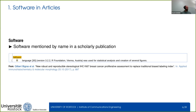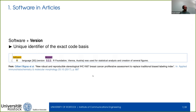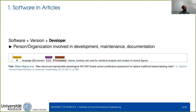So, how is software mentioned in scientific articles? Here in the example we have R, mentioned because it was used for statistical analysis and creation of several figures. It's important to note that we only consider software mentioned by name — sometimes authors would use phrases like 'computer software' or 'source code,' and those generic terms we do not consider. There is also further information about the software, such as version 3.2.2, which identifies the unique development state of the software that was used.